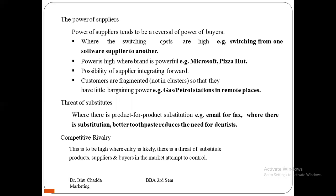The threat of substitutes occurs where there is product-for-product substitution — for example, fax has been replaced by email. Competitive rivalry is where the threat of entry is likely, there is a threat of substitutes, and suppliers and buyers in the market attempt to control the situation. All these are threats which are outside the company, but the company has to internally adapt so that it can survive.